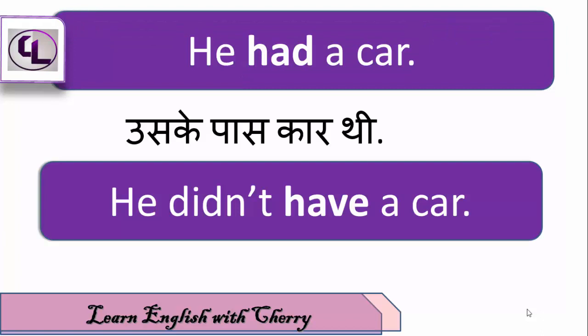उसके पास car थी — He had a car. उसके पास एक pen था — He had a pen. यहाँ पे had के साथ third form नहीं लगा हुआ है। उस case में यह sentence simple past है, जैसे हमने अपने पिछले video में किया था। यहाँ had itself एक verb है।